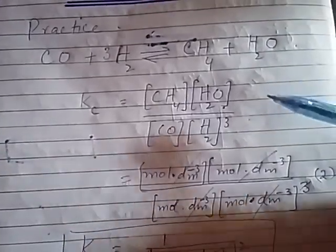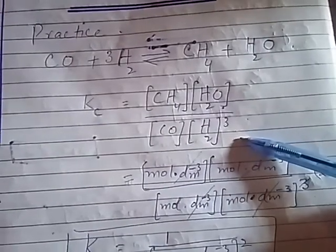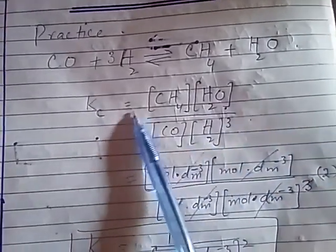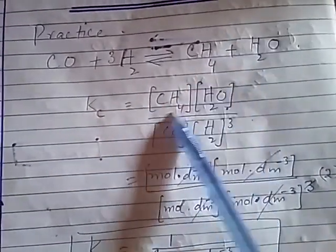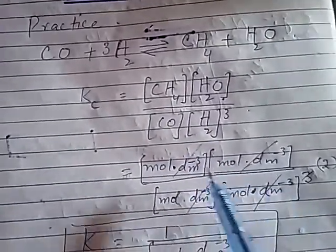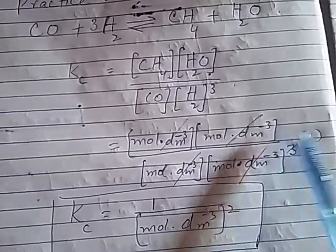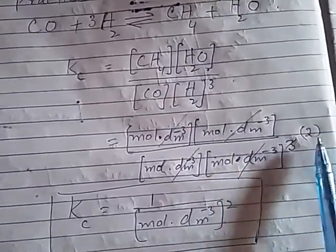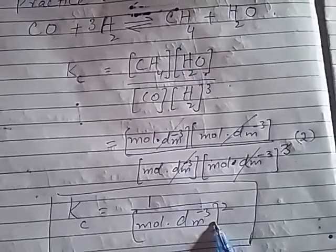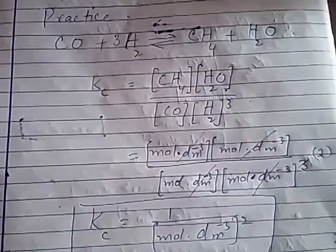So, the unit of this equilibrium constant expression is 1/(mol dm⁻³)², which simplifies to (mol dm⁻³)⁻². Now I have written a practice question on how to establish the equilibrium constant. You write the product first, then the reactant, then cancel the units — and the remaining unit here is (mol dm⁻³)⁻². Hope you liked the video; kindly share with friends. Thank you.